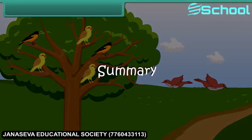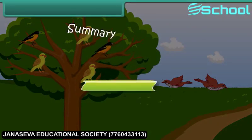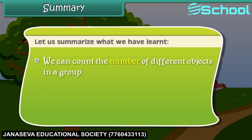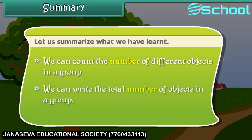Summary. Let us summarize what we have learned. We can count the number of different objects in a group. We can write the total number of objects in a group.